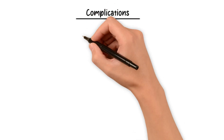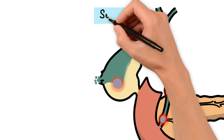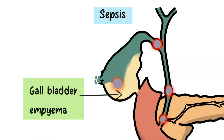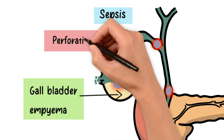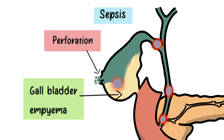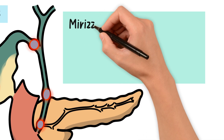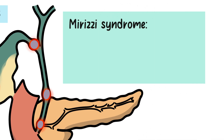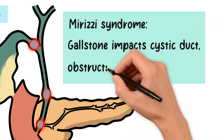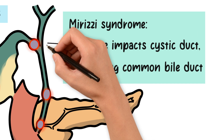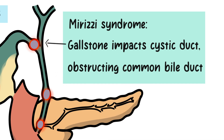Acute cholecystitis can lead to serious complications such as sepsis, gallbladder empyema — where the gallbladder lumen is filled and distended by purulent material — and even gallbladder perforation, which require immediate medical attention. In rare instances, it can cause Mirizzi syndrome, which occurs when a gallstone becomes impacted in the cystic duct and compresses or obstructs the common bile duct. This compression can lead to cholestasis, a condition where bile flow is blocked or reduced.